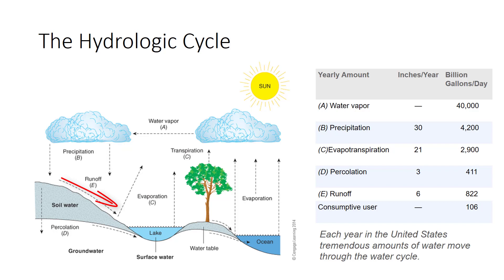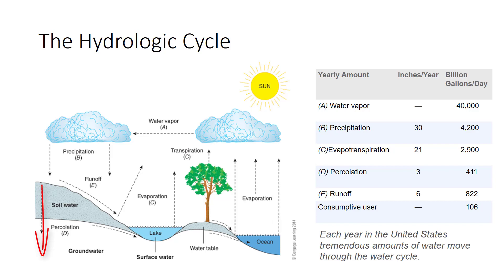Some rainwater runs into streams and lakes. Most of this water finds its way into rivers that finally flow into the ocean. Other water is absorbed into soil to later evaporate or be used by plants. Finally, some rainwater percolates into the water table, which is the upper surface of saturated underground material. Most of this, too, eventually returns to the sea.